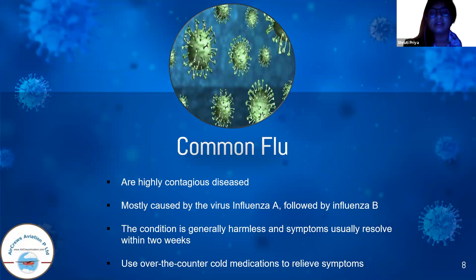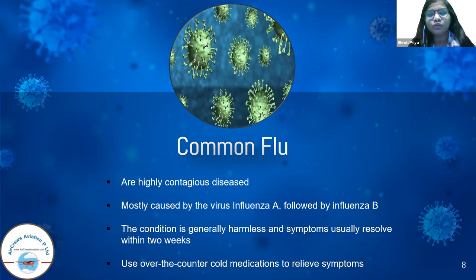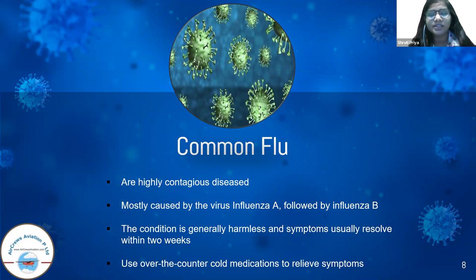Now talking about common flu — we have understood what coronavirus is, so to compare the two, we need to understand the common flu as well. Common flu is a contagious disease caused by influenza A or influenza B. It is generally not that harmful because it can be cured in two weeks through simple antibiotics or simple medications. Severe conditions only occur when a person's health is already compromised. Otherwise, it can be cured in two weeks or even one week, making it a less harmful virus.